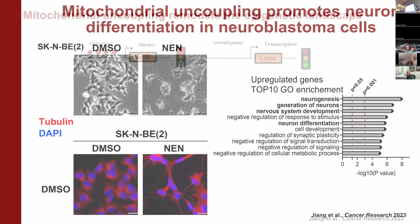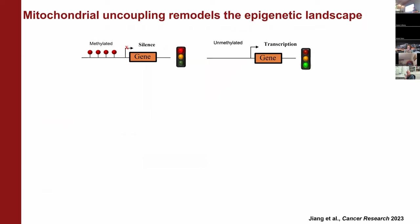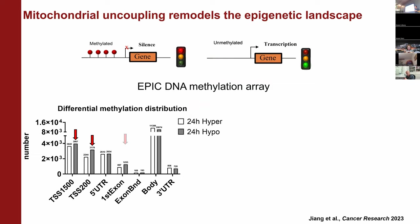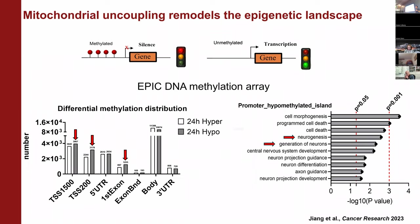Next, we want to understand how NEN contributes to this transcriptional change. One easy hypothesis is related to DNA methylation, since DNA methylation in the promoter region silences gene expression. We hypothesize that NEN might remove methylation in the promoter region. To test this hypothesis, we used a DNA methylation array. Indeed, we see that NEN treatment reduces DNA methylation in CpG islands, especially in the promoter region, which is strongly associated with neuron differentiation genes. This exciting data suggests that mitochondrial uncoupling promotes DNA demethylation in the promoter of neuron differentiation genes, thereby activating the neuron differentiation program.